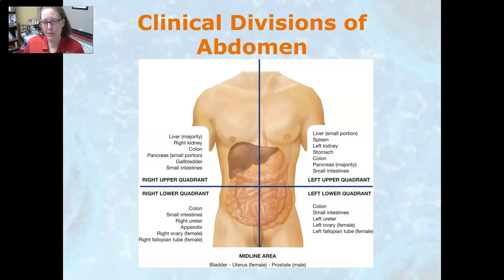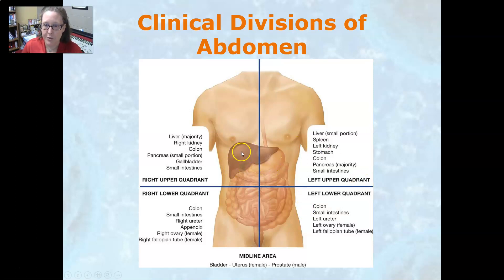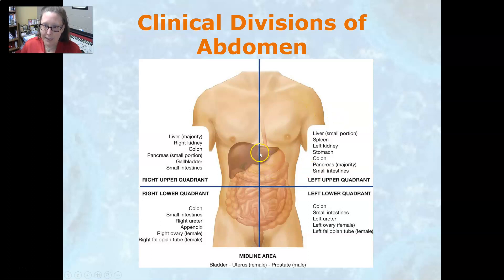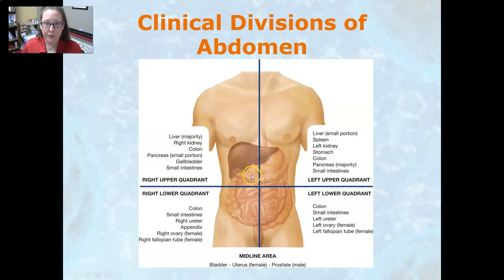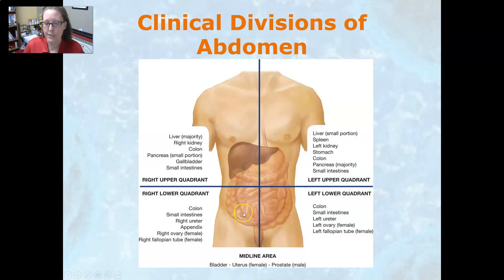The four quadrants are used a lot in charting to narrow down the location of different organs. We have the right upper quadrant, right lower quadrant, left upper quadrant, and left lower quadrant. For example, if a patient has gallbladder issues with pain in the upper right area, you chart right upper quadrant pain. Structures in the right upper quadrant include the majority of the liver, the right kidney, part of the colon, a small portion of the pancreas, the gallbladder, and some small intestines — noting that the small intestines and colon span all four quadrants.